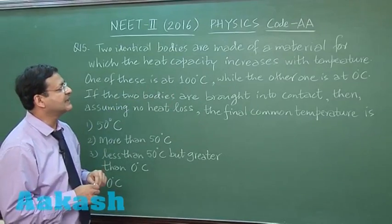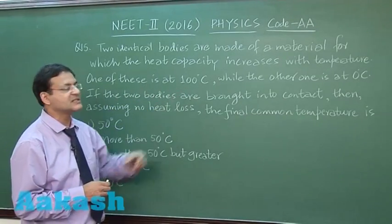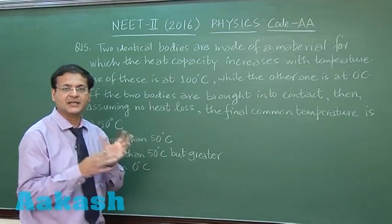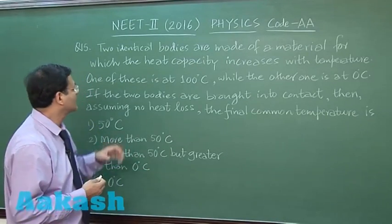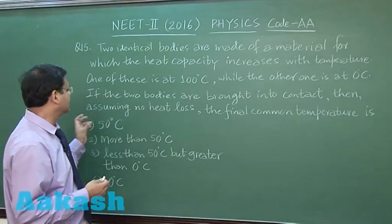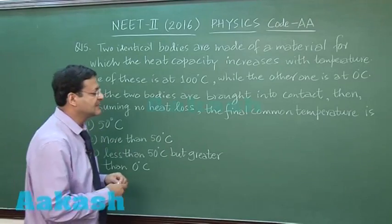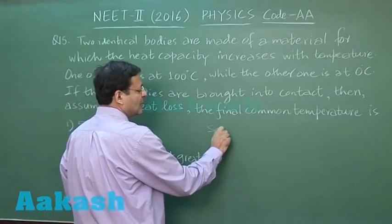Now one of these is at 100 degree Celsius while the other one is at 0 degree Celsius. So one is having higher heat capacity, another one has lower heat capacity. If the two bodies are brought into contact, then assuming no heat loss, the final common temperature - in this particular question you have to have